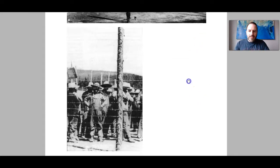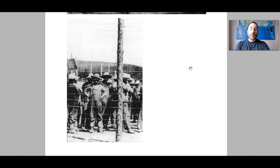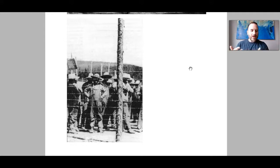You can see images of these interned men. These operations weren't just in Alberta — there were camps scattered from Newfoundland all the way to the coast of British Columbia, including Vernon, BC. These enemy aliens never actually did anything wrong. They just happened to be, in the eyes of the Canadian government, the wrong ethnicity.